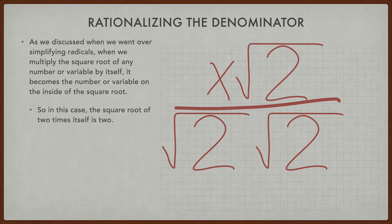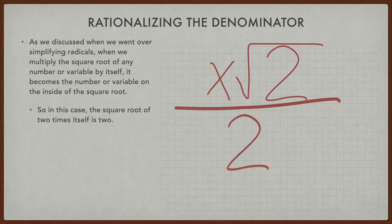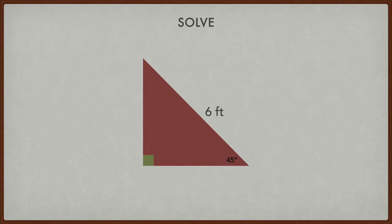As we discussed when we went over simplifying radicals, when we multiply a square root or any other number by itself, or of any number or variable by itself, it becomes the number inside the square root. So in this case, the square root of 2 times itself is 2. So we end up getting x square roots of 2 over 2. So if we go back to 6, remember, this ends up being 6 square roots of 2 over 2, which we would rewrite as 3 square roots of 2.